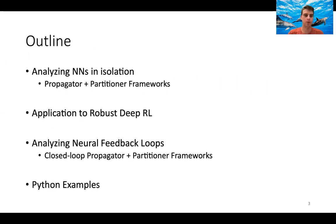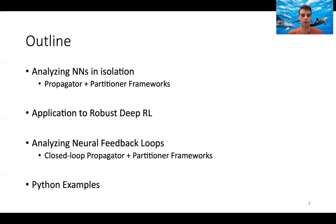We're going to go through this in four steps. First, we'll talk about how we can analyze neural networks in isolation, leading to a propagator and partitioner framework. We'll show how to apply these ideas to robust deep reinforcement learning. Then we'll bring these tools into the neural feedback loop case — where a neural network is embedded in a closed-loop system — leading to closed-loop variants of the propagator and partitioner ideas.